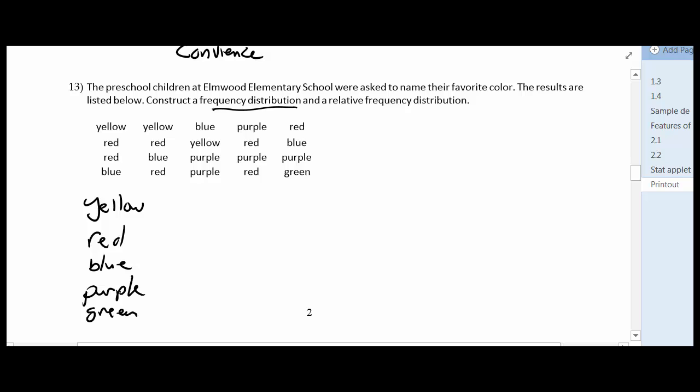All right. So frequency distribution, frequency refers to how often something shows up. So I want to count how many yellows and reds and blues to start off with. So I'm just going to do what's called a tally mark. So I see a yellow, I see two reds, I see one blue, another yellow, two more reds and one more blue, another blue, another yellow, two purples, another purple, two more reds and a purple, another red, a blue, purple, and a green. Okay.